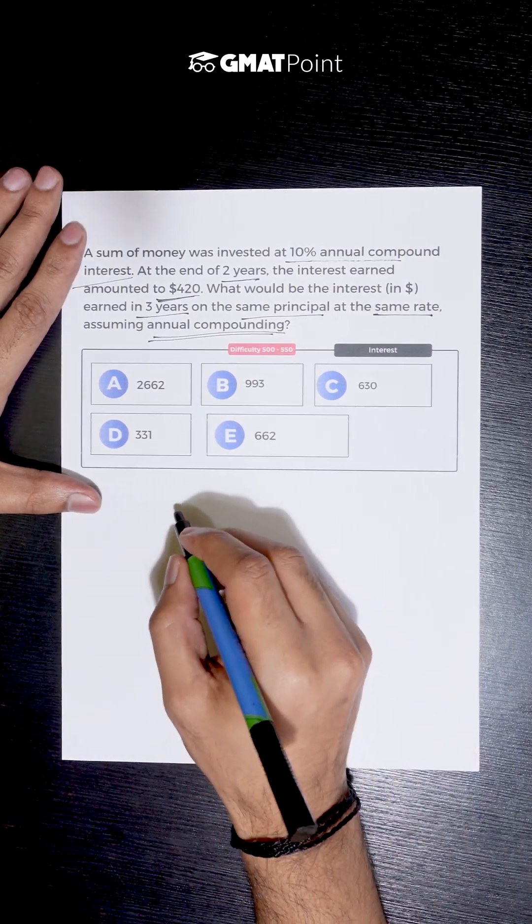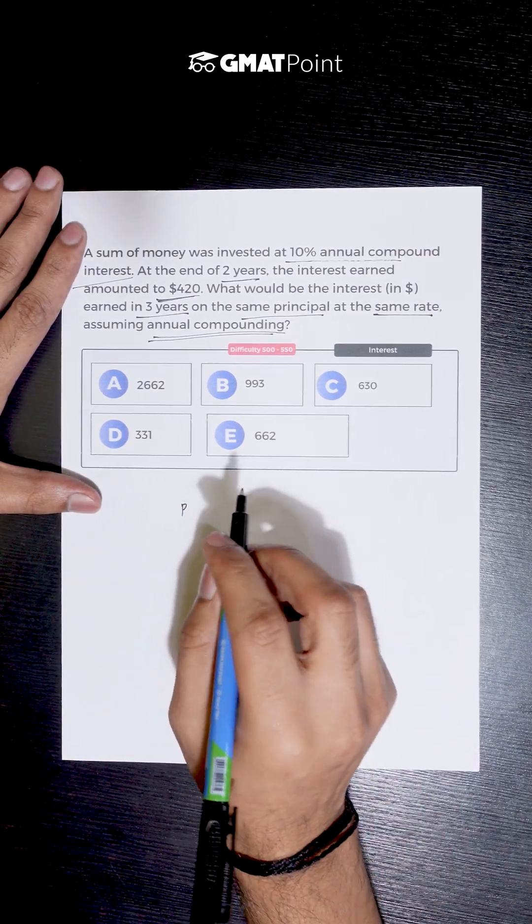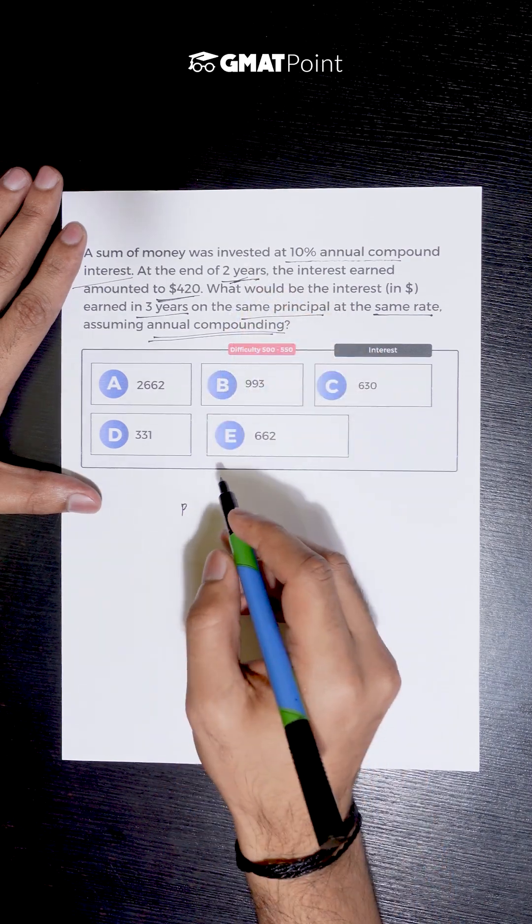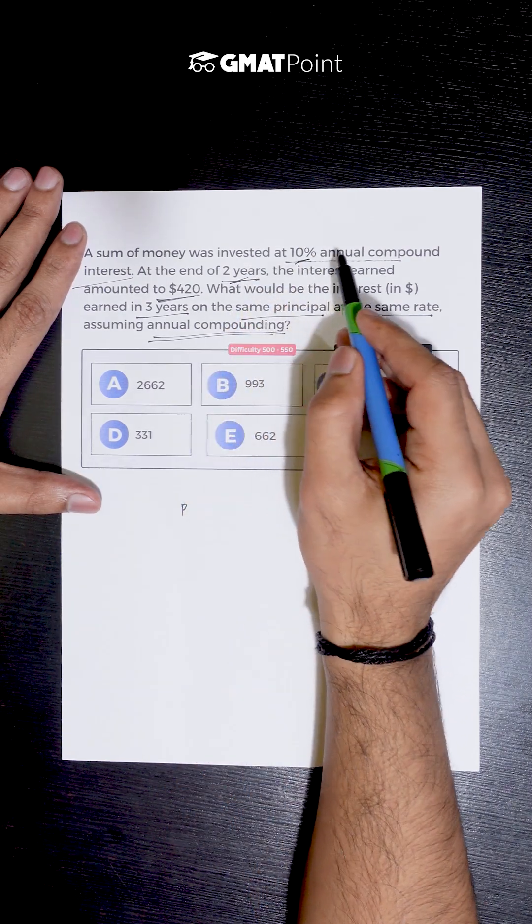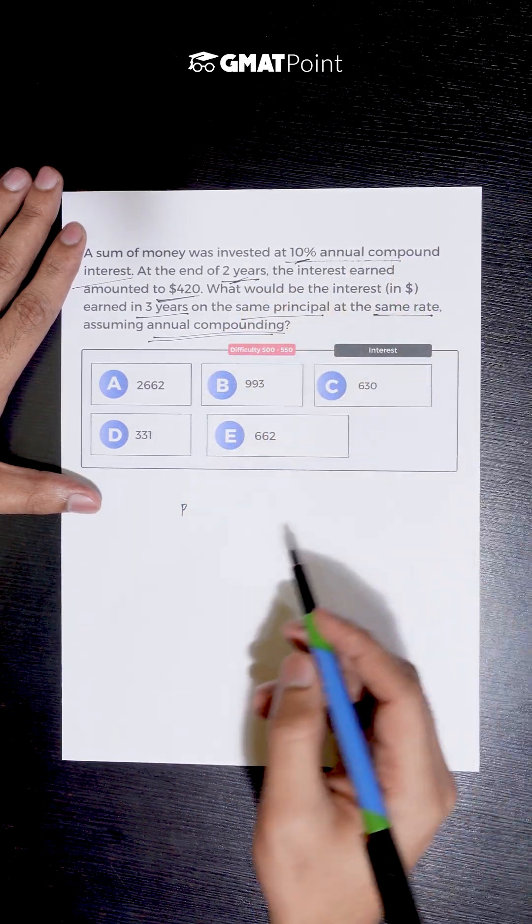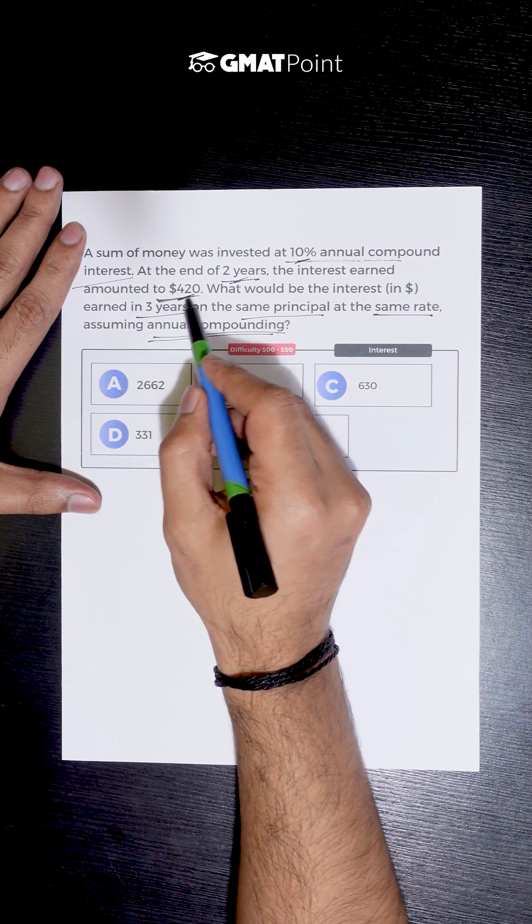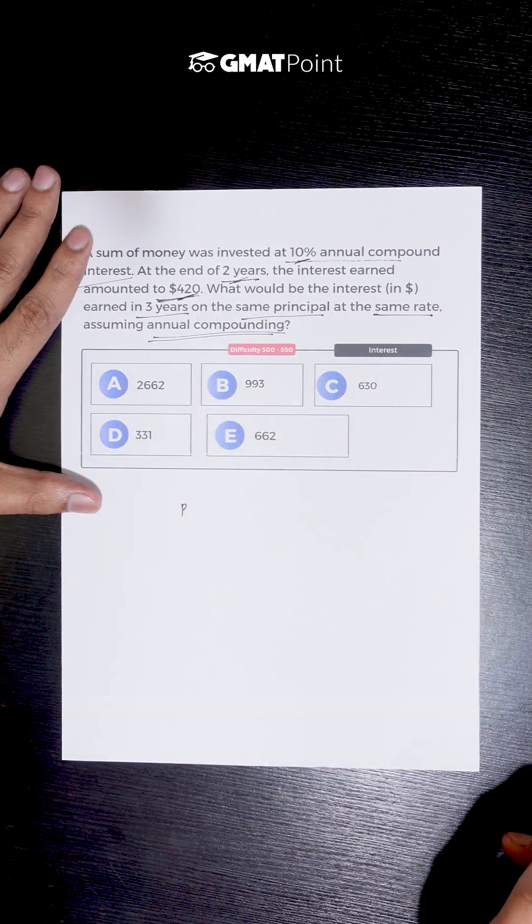So let us assume the principal amount that is invested for two years to be P. We are told that it is being invested at 10% annual compound interest, and the interest after two years was given to be $420.